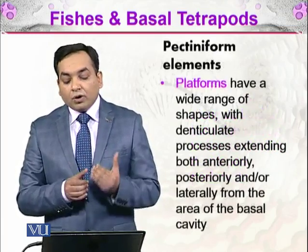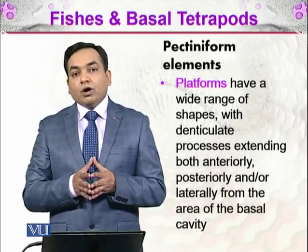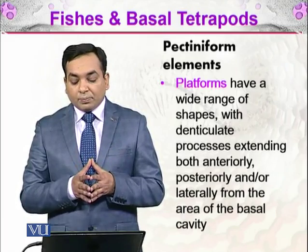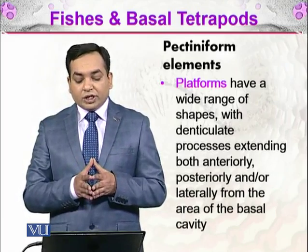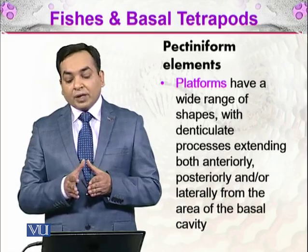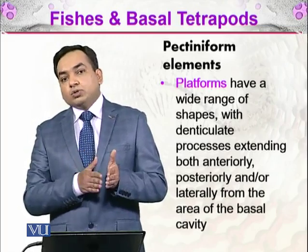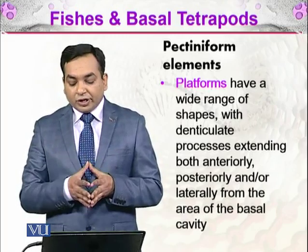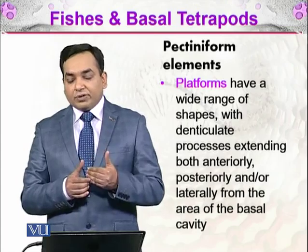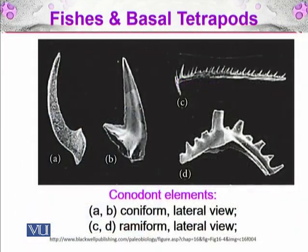The third form is the pectiniform elements, also called platforms. Platforms have a wide range of shapes with denticulate processes extending both anteriorly and posteriorly, and or laterally from the area of the basal cavity. Here you can see diagrams for the coniform and ramiform — in coniforms, one cone-like structure is visible, while in the ramiform, multiple structures are visible, as described. These are the different forms of conodont elements found as microfossils in the fossil record.